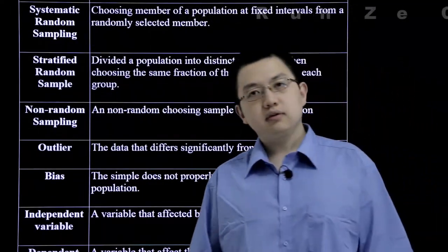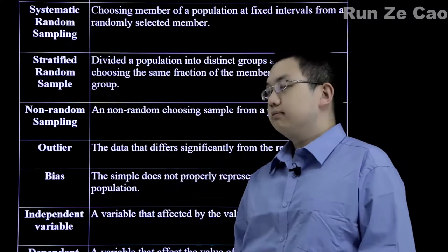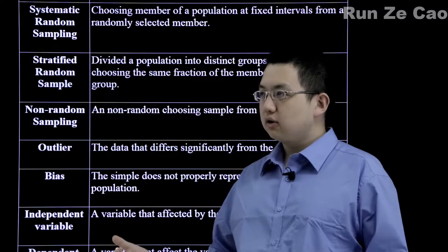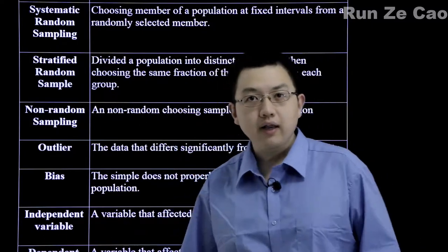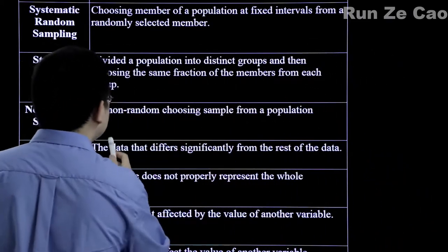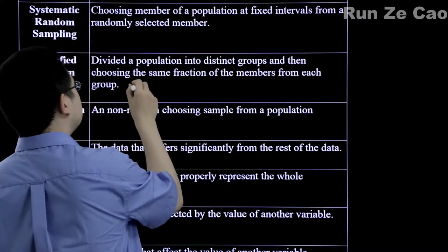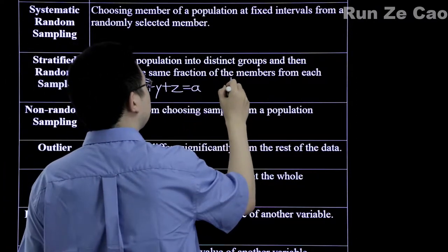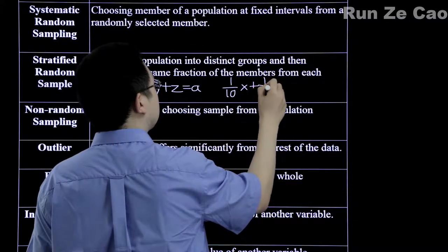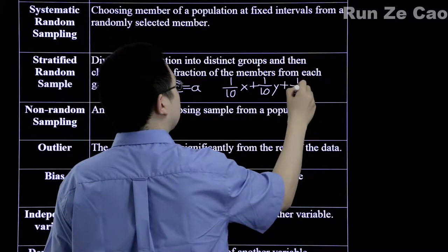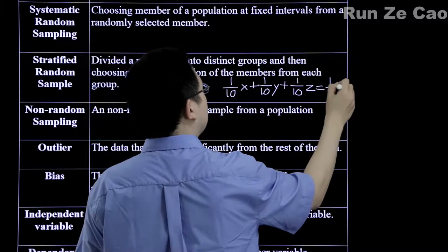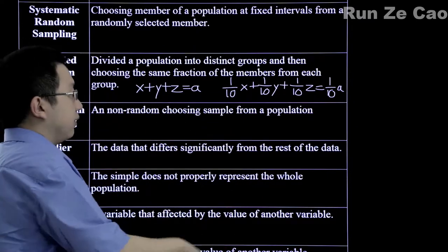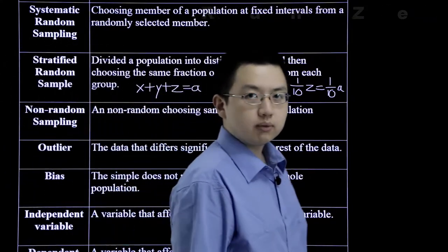Stratified random samples: first you divide the population into strata — strata are layers, so you divide the population into groups, for example by height or by age. Then you choose the same fraction of members from each group. If x plus y plus z equals a, then one-tenth of x plus one-tenth of y plus one-tenth of z equals one-tenth of a. This is the principle that stratified random sampling essentially operates under, making sure that each group is equally well represented.